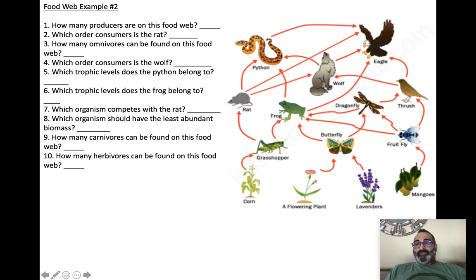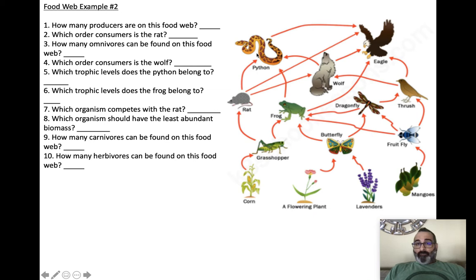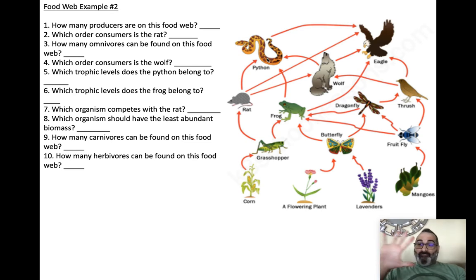Let me show you those paths. Zero, one, two, three, four, five. Zero, one, two, three. Ready for the next one? Zero, one, two, three, four. So the python is a three, a four, and a five. Belongs to three different feeding levels. This gets complicated. That's why I'm going over this.